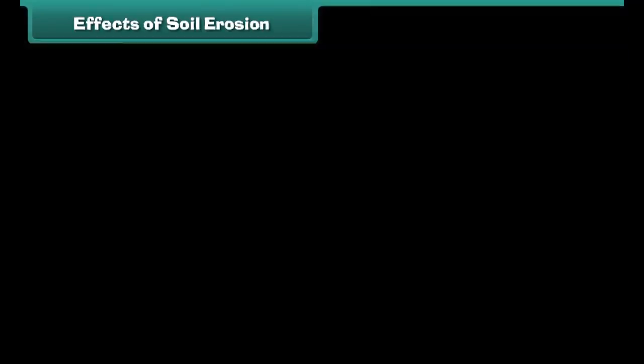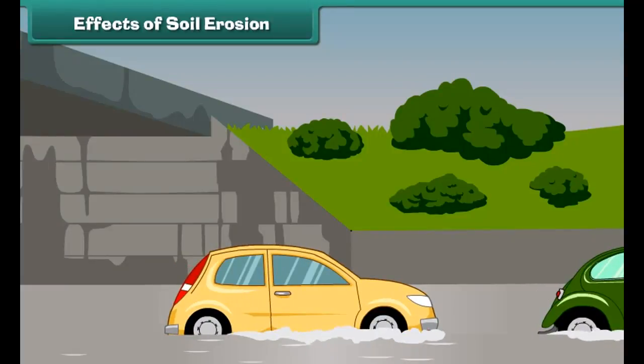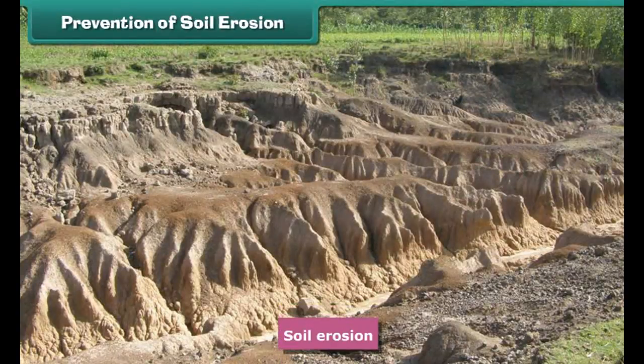Due to soil erosion, the soil shifts and accumulates on the roads and streets. This blocks the driving and results in accidents. It also blocks many irrigation canals.